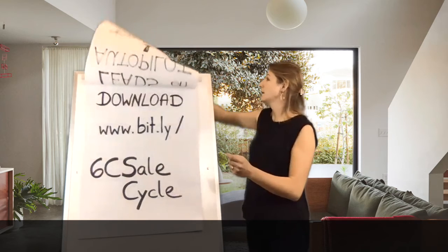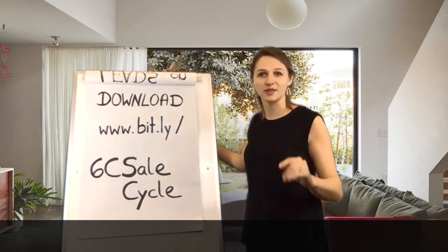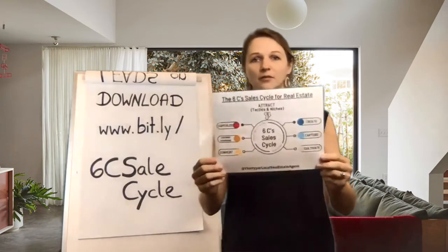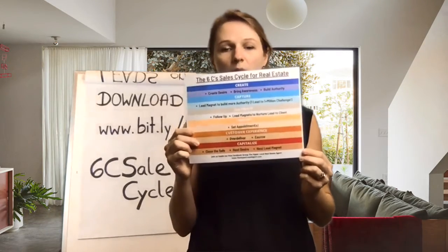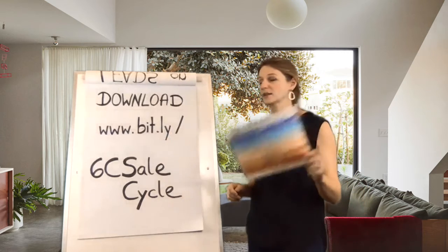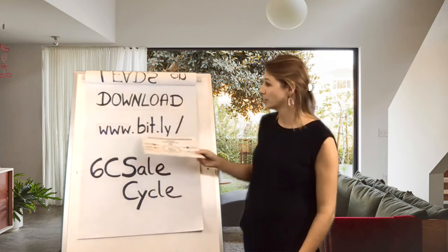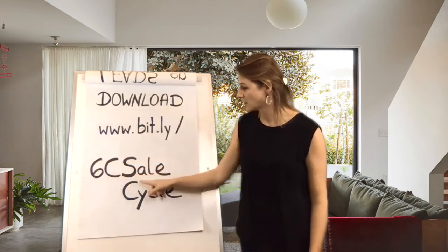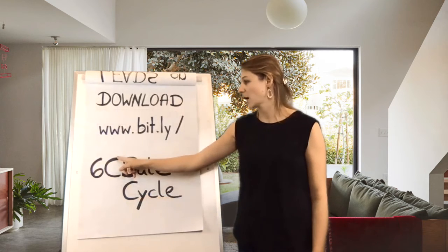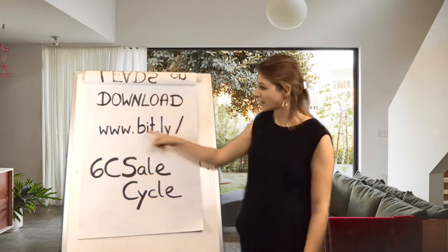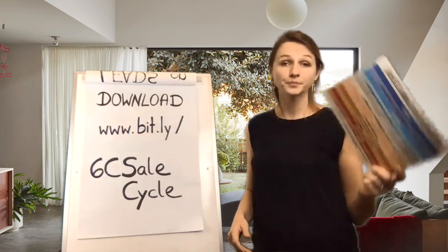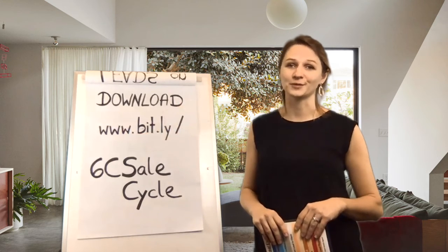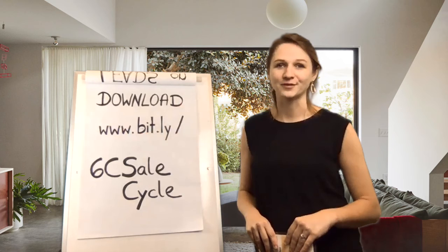As promised, I want you to walk away with the system. You will have this entire PDF — it's the 6C Sales Cycle, and all the steps are written out so you do not miss a step. You can get it simply by going to www.bit.ly/6CSaleCycle — that's a capital C, capital S, capital C: 6C Sale Cycle. Get your free download there. Thank you so much for attending the free training. I hope to see you inside the Hyperlocal Real Estate Agent group, and I definitely hope to see you inside the free five-day bootcamp starting soon.